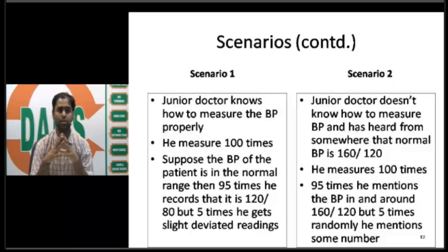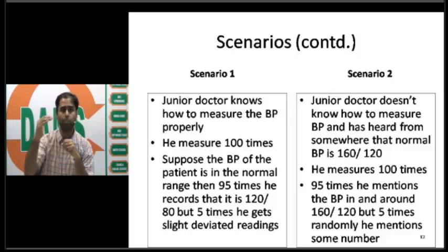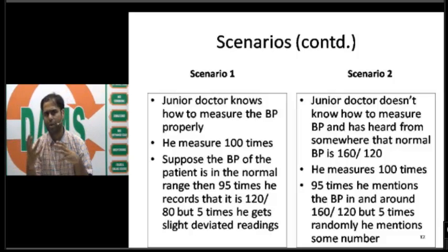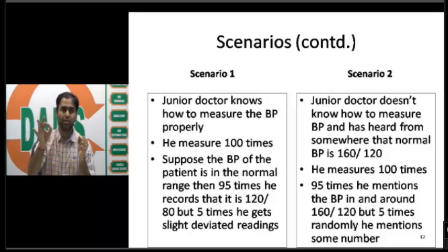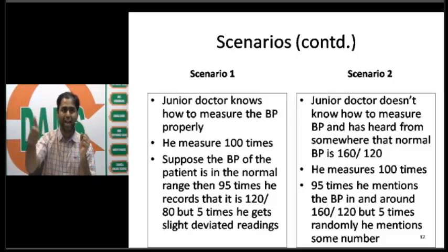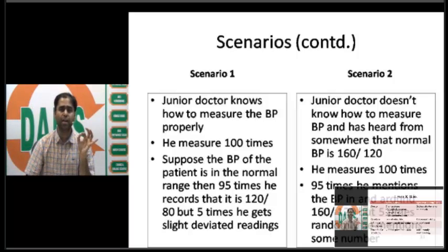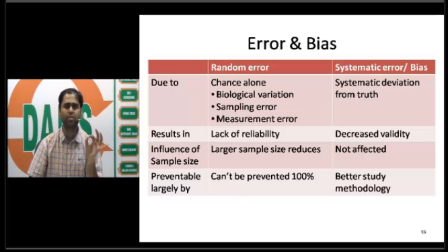In scenario two, imagine the intern cheated in exams and doesn't know how to measure blood pressure. He overheard the senior doctor say normal blood pressure is 160/120, so he writes false readings near that value. This is what is called bias. Bias can be removed 100% if you train the doctor. It is not affected by sample size, is due to willful error, and leads to a decrease in validity. This contrast between random error and bias is summarized in the table.